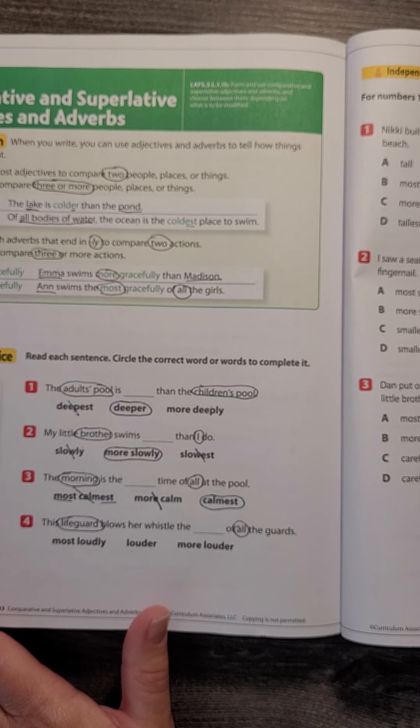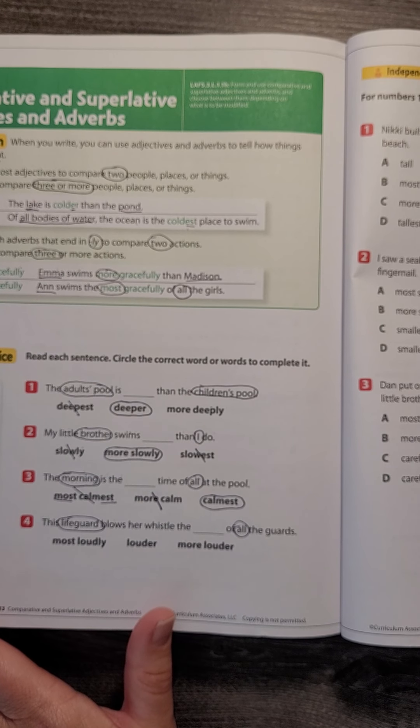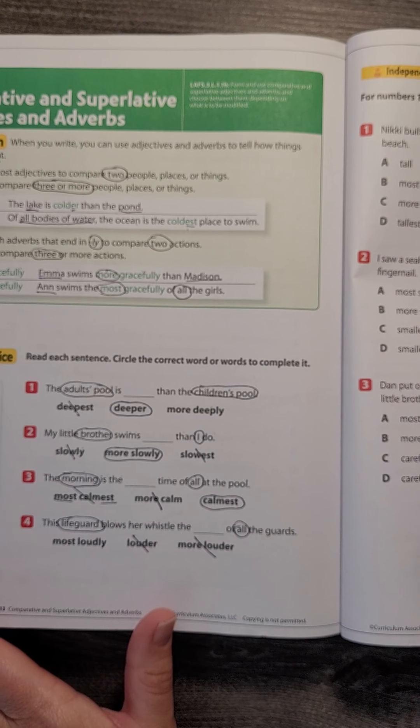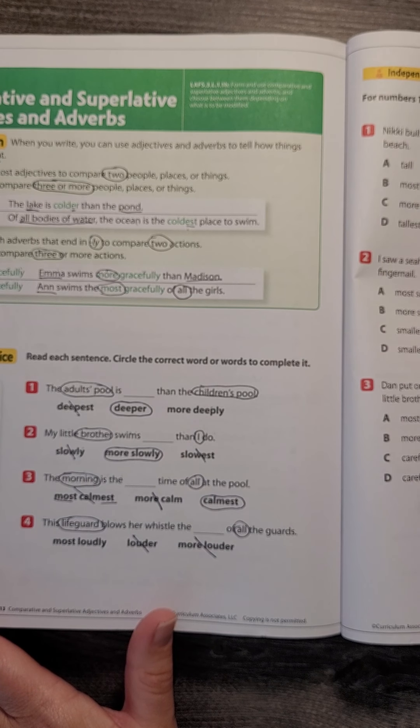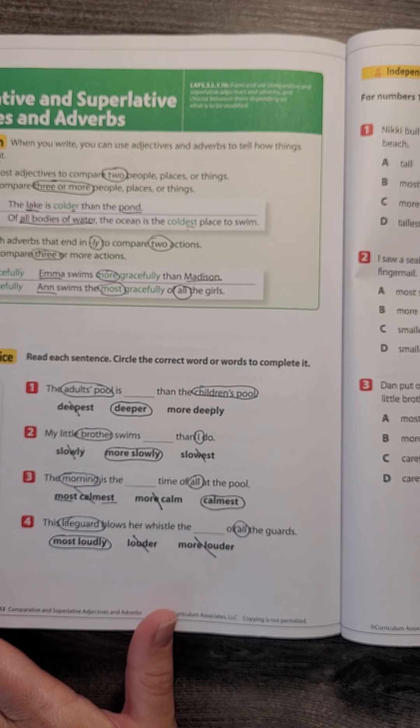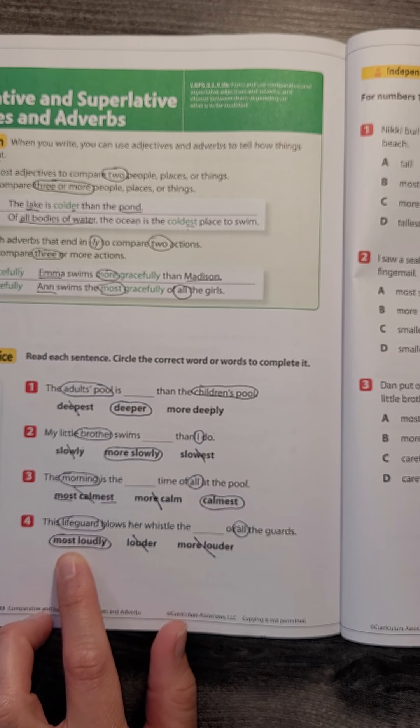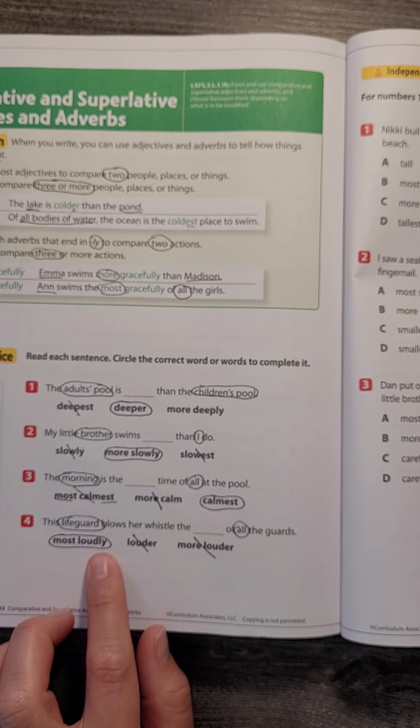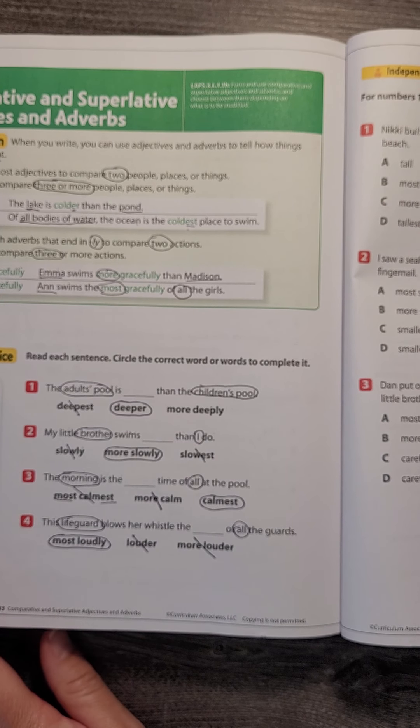So that means it's more than one. So I know it's not going to be 'louder' or 'more louder' because that's only comparing two. So we would say 'most loudly' because 'most' is talking about comparing more than two, or three or more, and 'loudly' is describing how she blows the whistle.